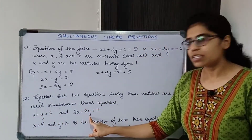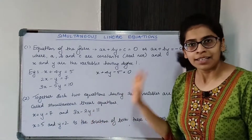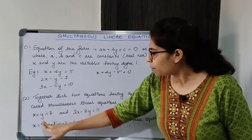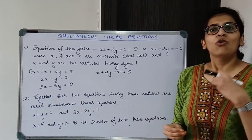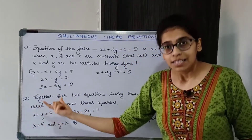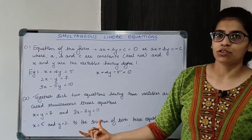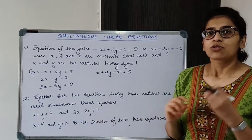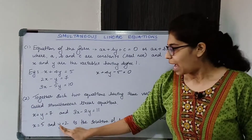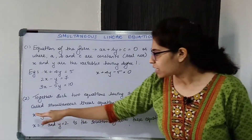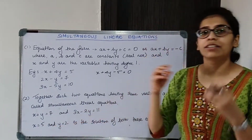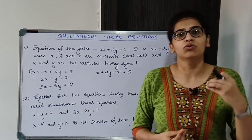The equations should have the same variables — if one equation has X and Y, the other should also have X and Y, not Y and Z or M and N. So whatever variables you are considering in one equation, those same variables should be there in the other equation. If you find values of these variables that satisfy both equations, then those values are the solution of the two equations.